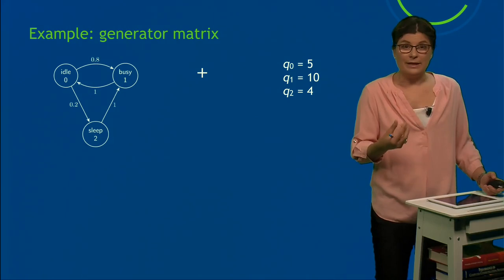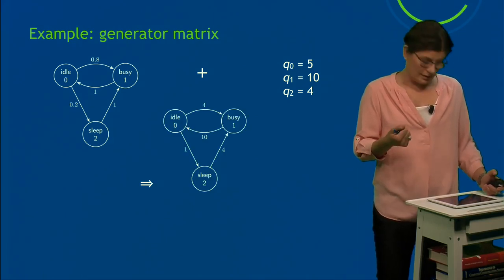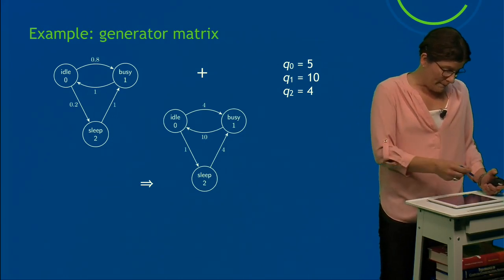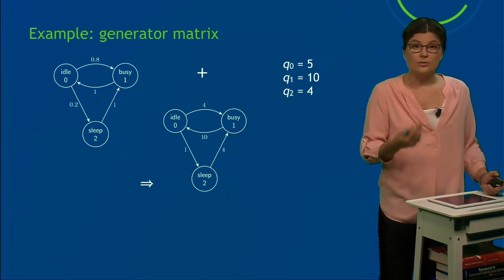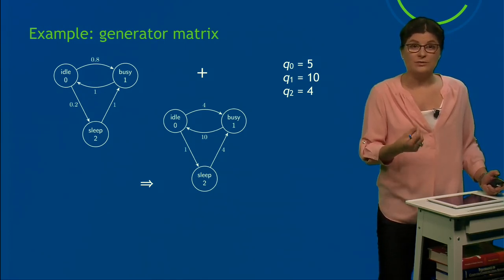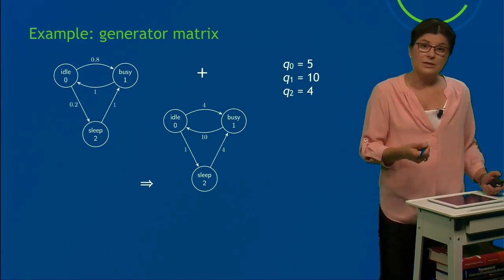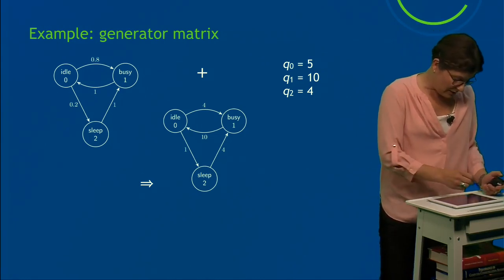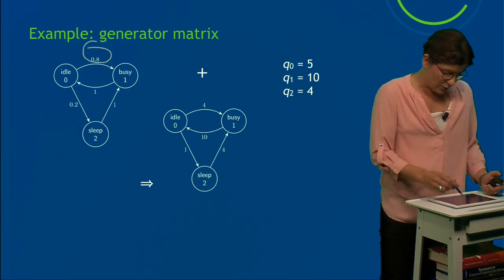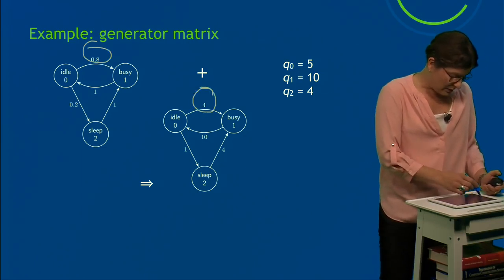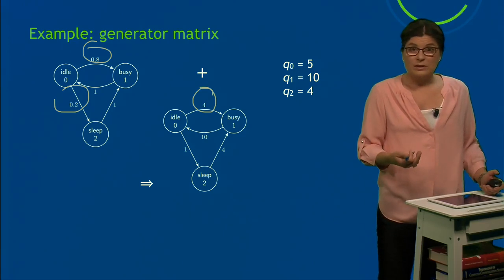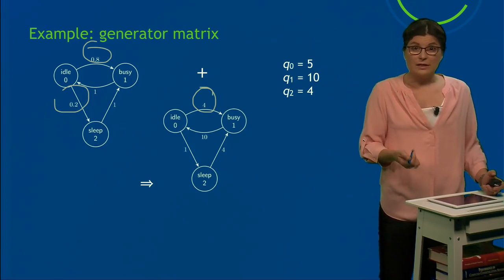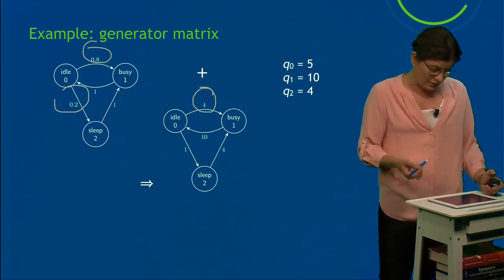So let's make a CTMC out of this. That's kind of easy. You multiply the probabilities on the transitions with the rate that goes with the exponential random variable per state. So for state 0, it is 5. And this is what I did. I multiplied 0.8 with 5, which gives me 4. And I multiply 0.2 with 5, and that gives me 1. And then, similarly, I do the same thing for the two other states.